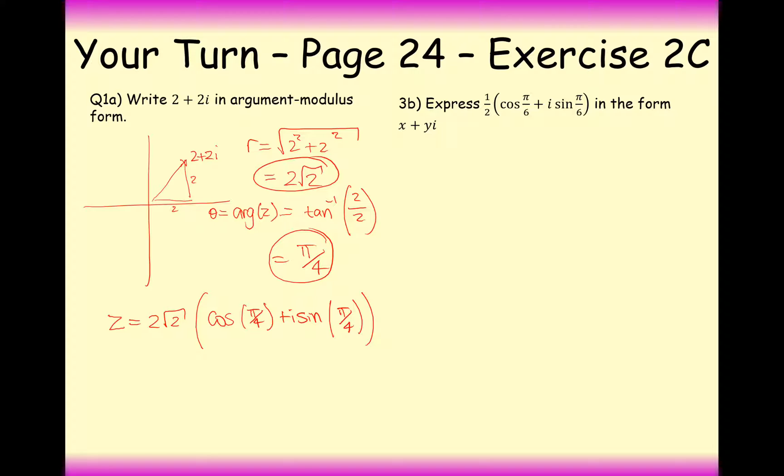Okay, question 3b here is slightly more difficult. But really it's not. All you have to do is work backwards from the argument modulus form back to x plus yi. Now what happens if we expand the brackets here? Okay, we get half cos pi by 6 there, plus i half times sine pi by 6. So really it's this part here that's the real part and it's this part here that's the imaginary part.